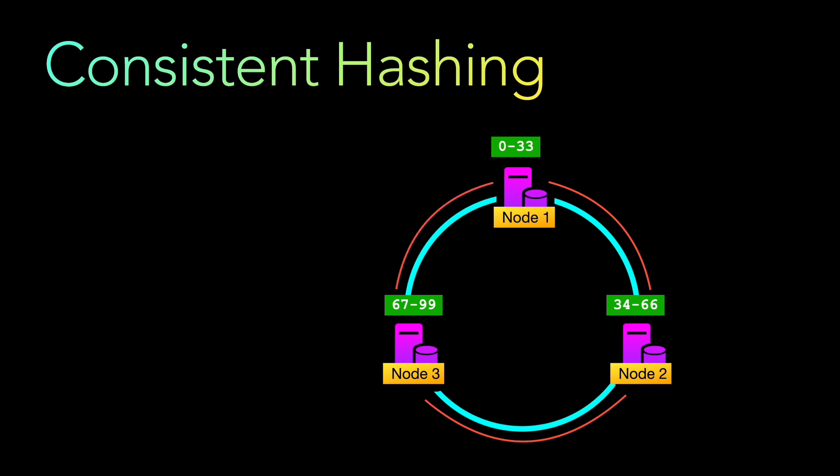Any record that gets persisted in this network will get assigned to one of these nodes depending on the hash value computed for that record. The entire hash ring gets segmented into different data sets: the segment between node 3 and node 1 contains hash range 0 to 33, so whatever hash value falls between 0 to 33 moves to node 1. The other two segments cover 34 to 66 and 67 to 99.